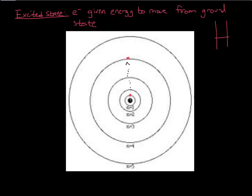When you give a particular atom energy — by hooking it up to an electrical power source, lighting it on fire, or just shining a light on it — you're giving that electron energy so it can jump from the ground state up to the excited state. Depending upon the amount of energy and the electron, it might move to different levels. With hydrogen, it could move up to the third, fourth, fifth, sixth, or seventh energy level — it depends on the amount of energy and how it hits that particular atom.